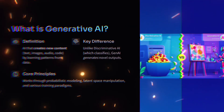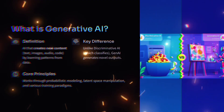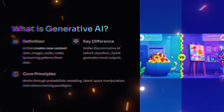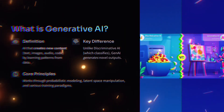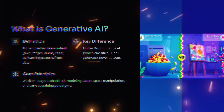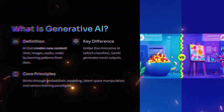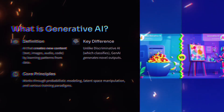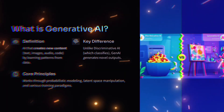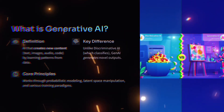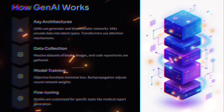What is generative AI? It is AI that creates new content — text, images, audio, and code — by learning patterns from data. The key difference from discriminative AI, which classifies inputs, is that generative AI produces novel outputs. Its core principles involve probabilistic modeling, latent space manipulation, and various training paradigms.